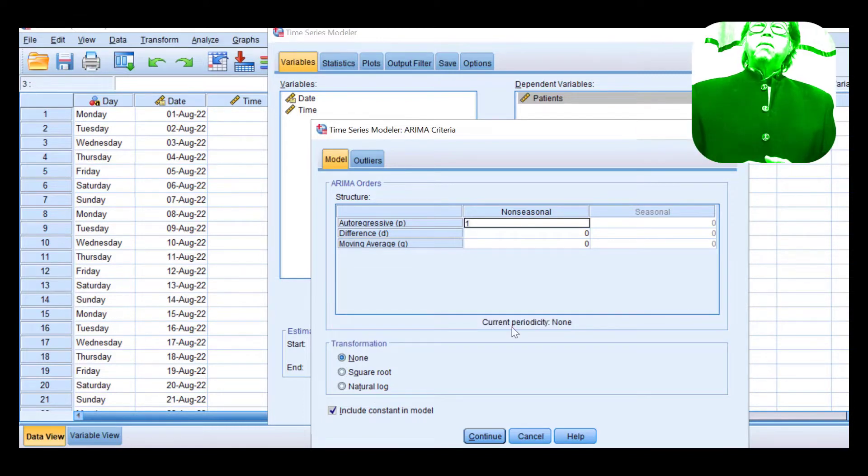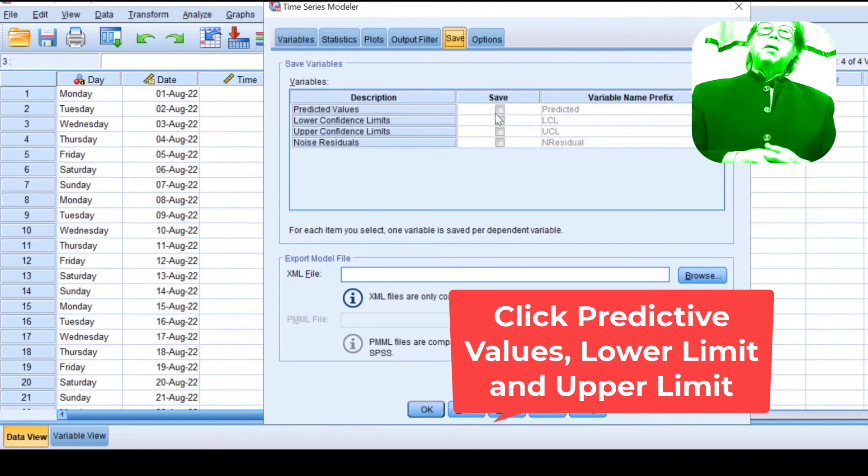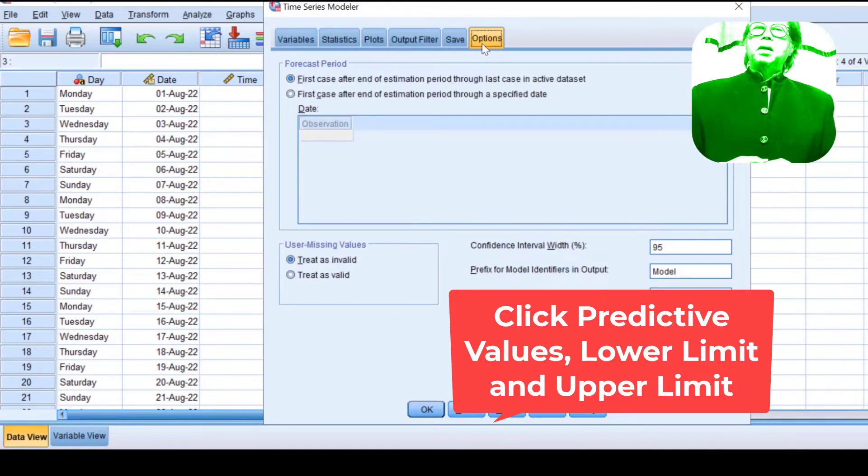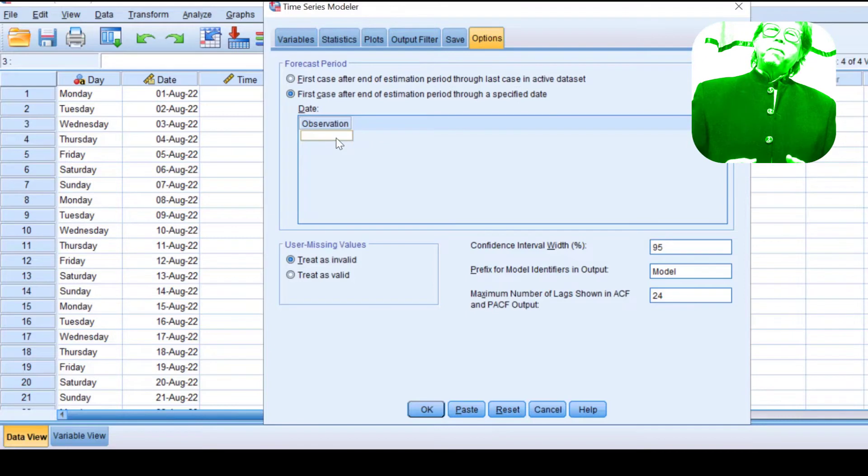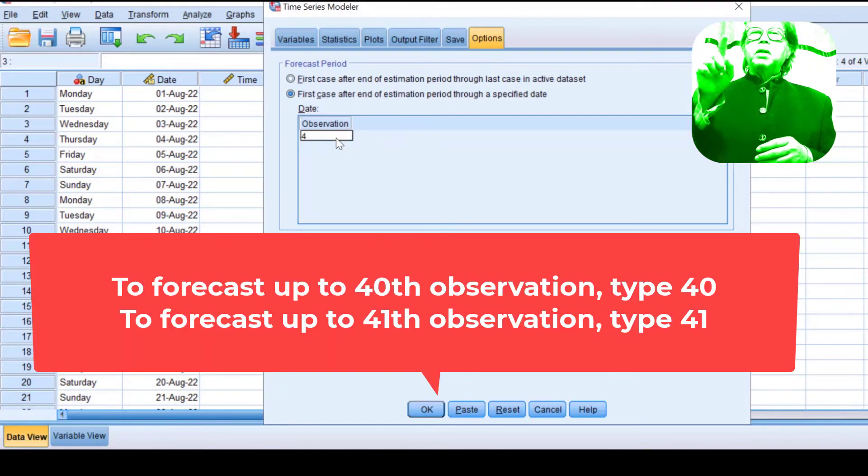You need to click Save, then tick Predicted Values, Lower Confidence Limit, and Upper Confidence Limit. For example, to focus on the period of 40 or 41, you click Option, then type 40 or 41 there, then click OK.